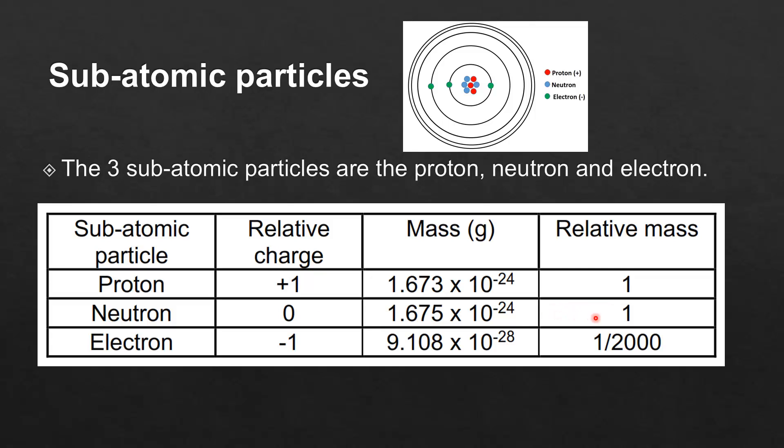And the electron has a relative charge of negative 1. The mass is 9.108 times 10 to the negative 28 and the relative mass is about one two thousandth of the mass of a neutron.